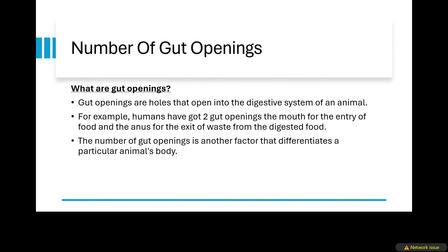So ladies and gentlemen, let us talk about the number of gut openings. When we are talking about gut openings, we are talking about the holes or the openings that open into the digestive system of an animal. For example, as a human being, you have got a mouth. So this mouth opens up into your digestive system. The digestive system opens through the mouth, and then the other opening is the anus. So humans have got two gut openings — the mouth for the entry of food and the anus for the exit of waste from the digested food. The number of gut openings is another factor that differentiates a particular animal's body.